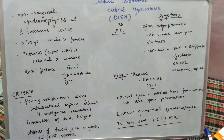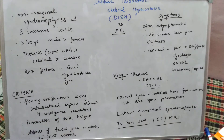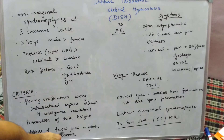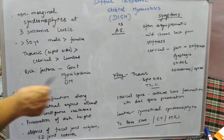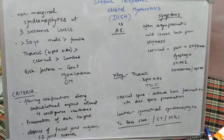Another important feature of DISH is the preservation of disc height, so the disc height will be preserved. The last criterion is the absence of facet joint ankylosis or SI joint erosion, which is seen in Ankylosing Spondylitis. These criteria must be fulfilled to diagnose a patient with DISH.